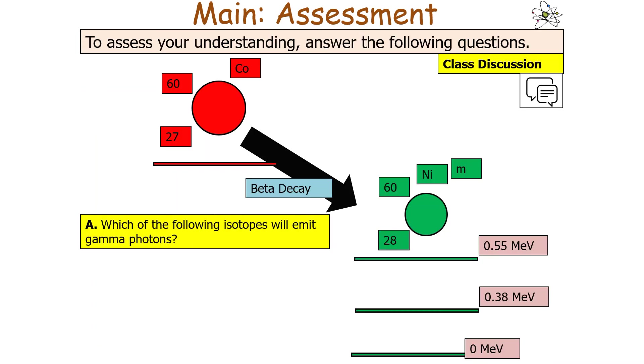Let's look at a few examples. If we look at this particular example of cobalt decaying into nickel, which of the following isotopes will emit the gamma photon? Well it's the nickel that emits the gamma photons as it's the nickel which is in the metastable state. It wouldn't be true to say that the cobalt emits gamma photons. It's in fact the product in that original beta decay process which is the nickel.